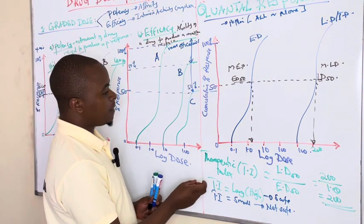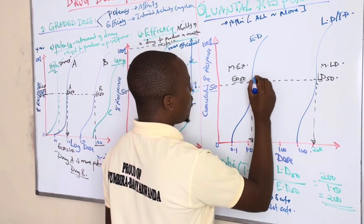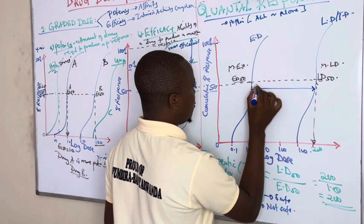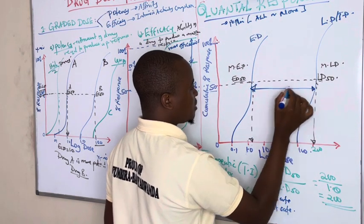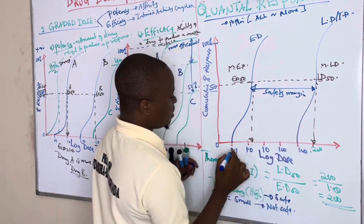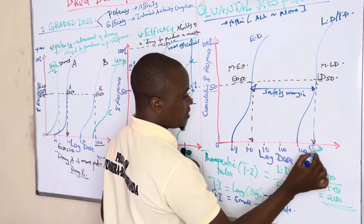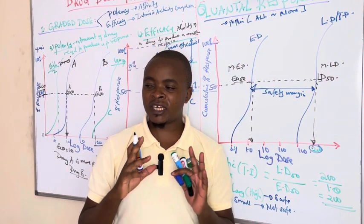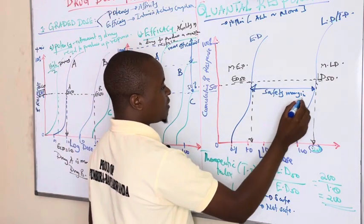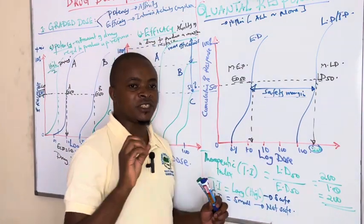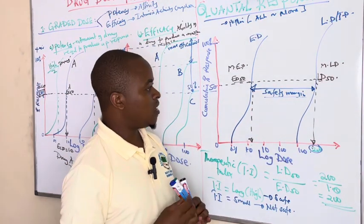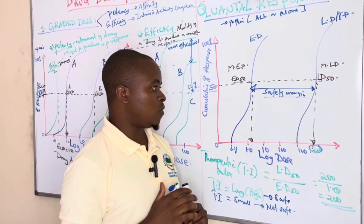Another concept we can determine is the safety margin of the drug, also called the therapeutic window. This is the range between ED50 and LD50. For example, if doses between 0.1 and 200 fall within this range, the drug is safe and will not produce adverse reactions in the patient. The therapeutic window is the difference between LD50 and ED50 of the drug.